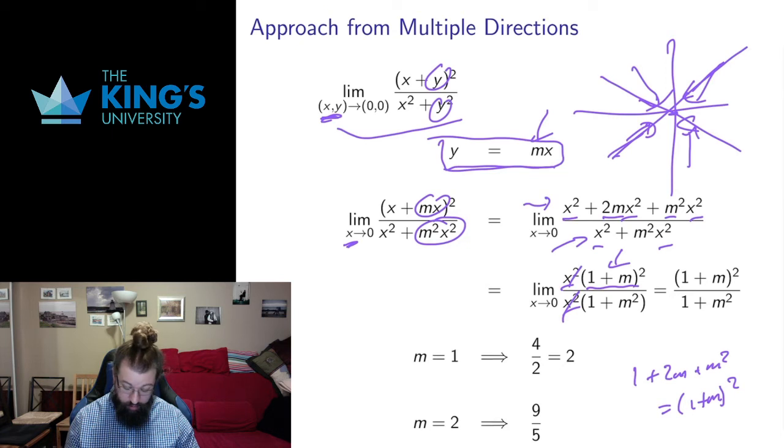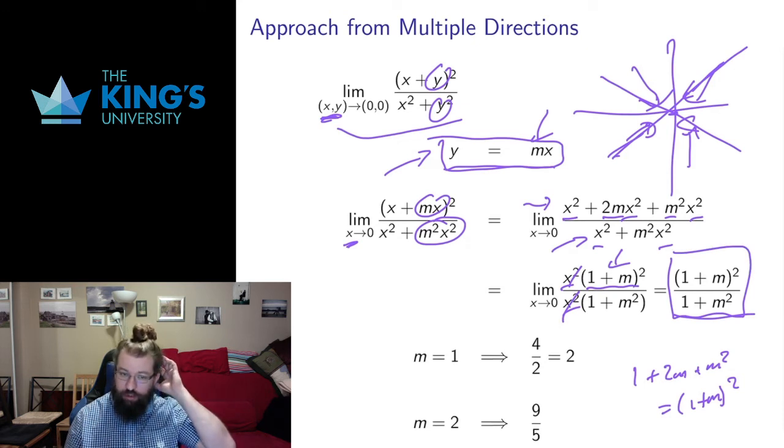The denominator, I factor the x squared out, it just gets 1 plus m squared inside the brackets. The x's cancel off. And then since the x's cancel off, there are no more variables. I can just evaluate this limit. I get this expression (1 plus m)^2 over (1 plus m^2). I chose a direction of approach and got this expression as my limit.